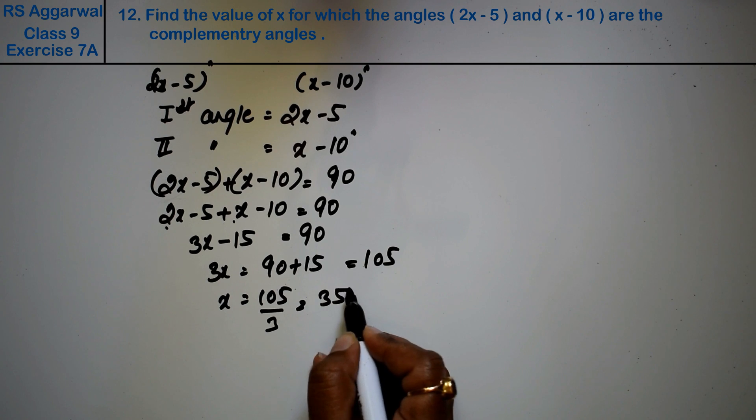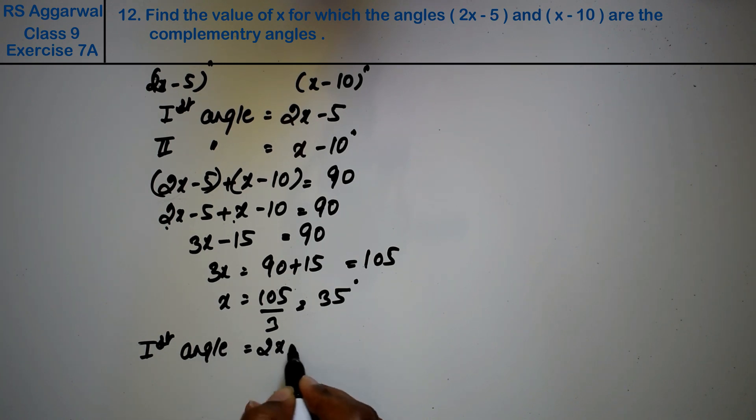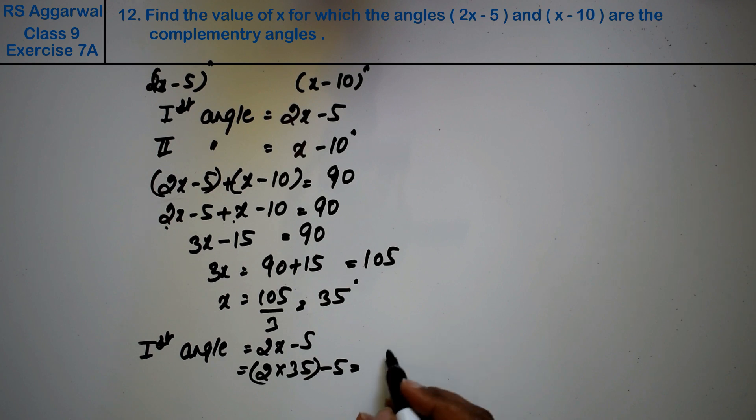Now let's verify the first angle. The first angle is 2x - 5 = 2(35) - 5 = 70 - 5 = 65 degrees. Now, how much is the second angle?